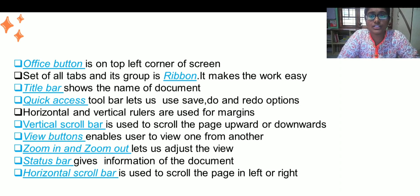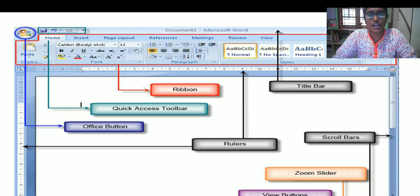There are set of rulers like Horizontal and Vertical which are used as margins. Vertical Scroll Bar is used to scroll the page up and downwards while Horizontal Scroll Bar enables us to scroll the page left and right. Zoom In and Zoom Out lets us adjust the view of the screen. Status Bar gives us the information regarding the document. So these are the options or the things which I discussed now. Just have a look into it.